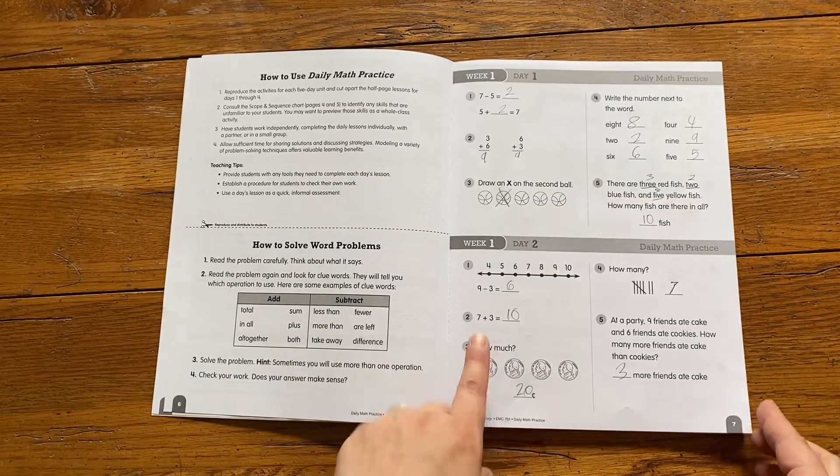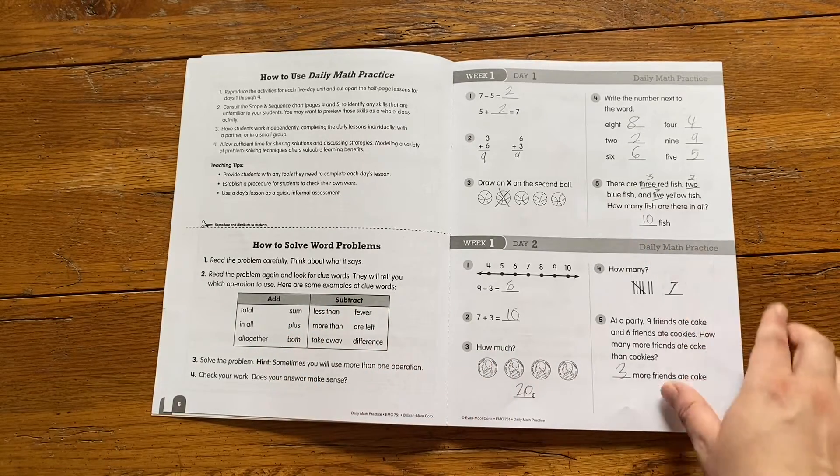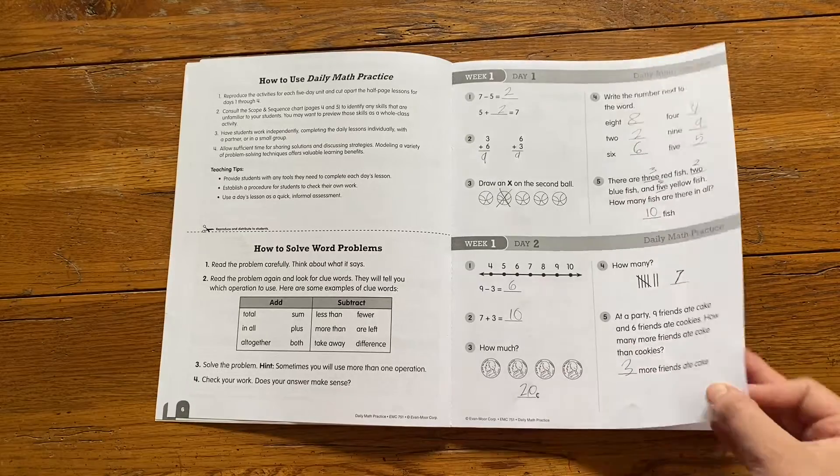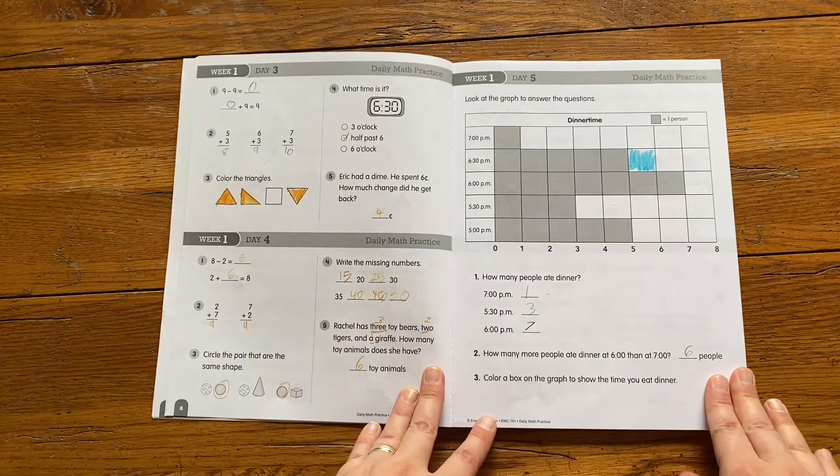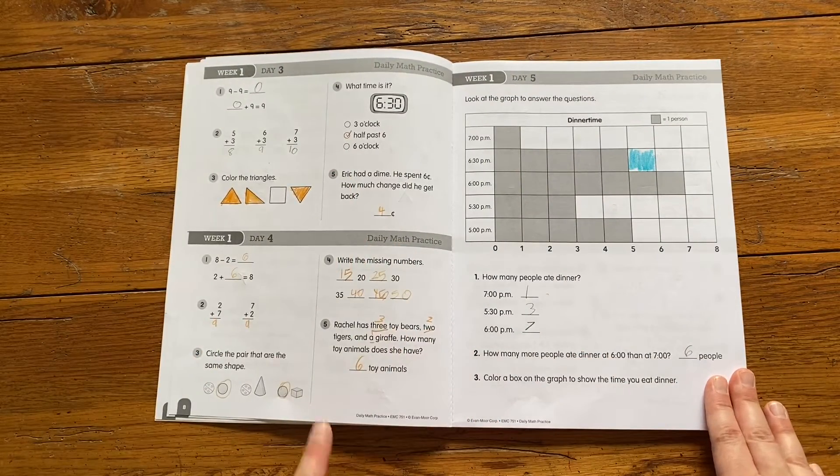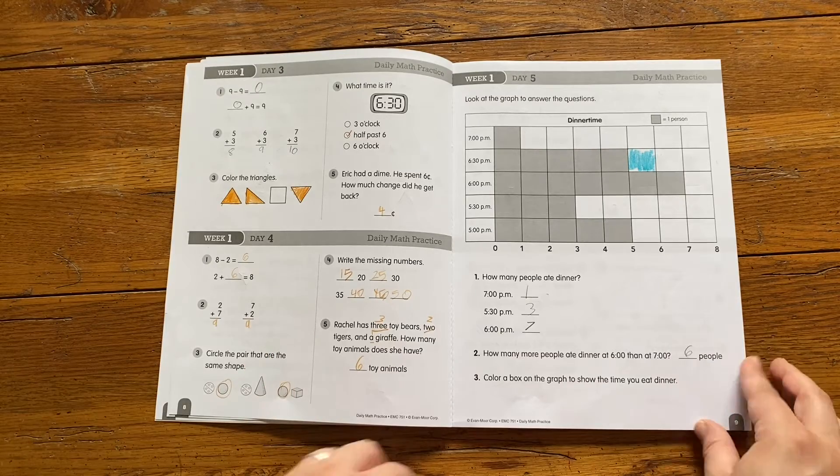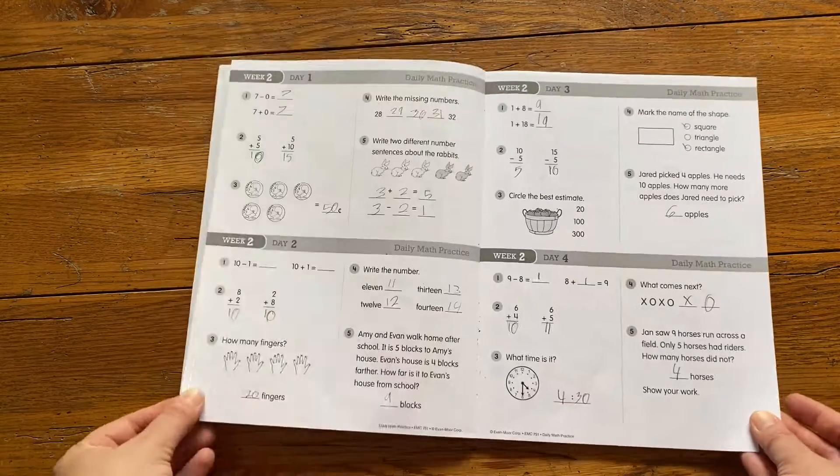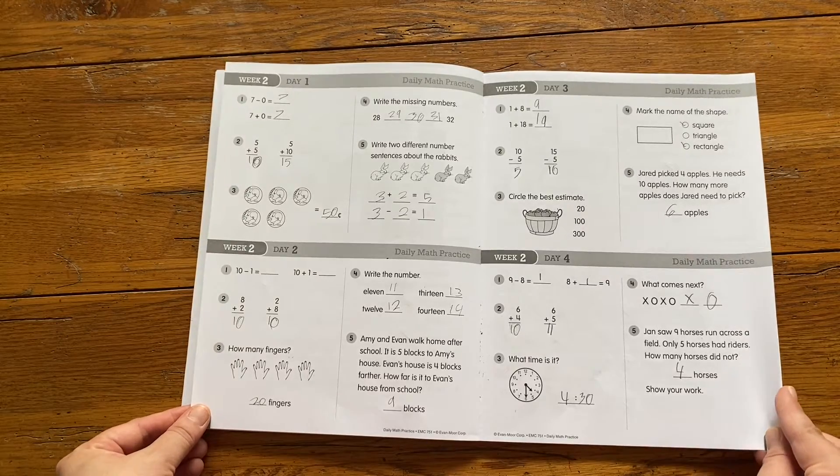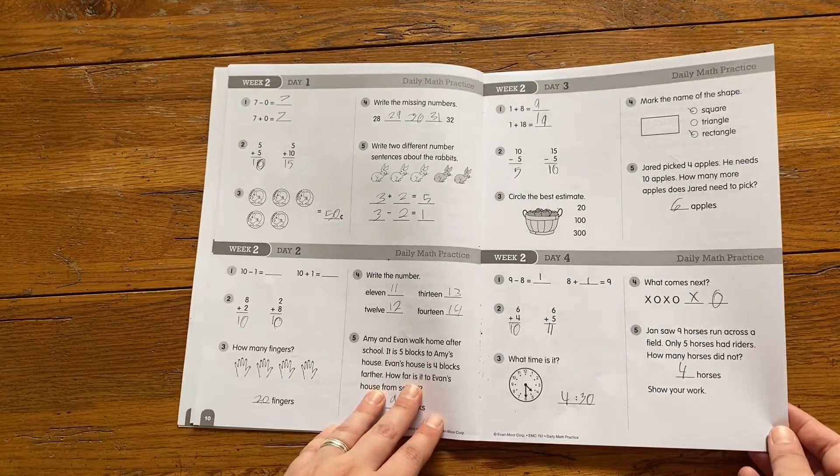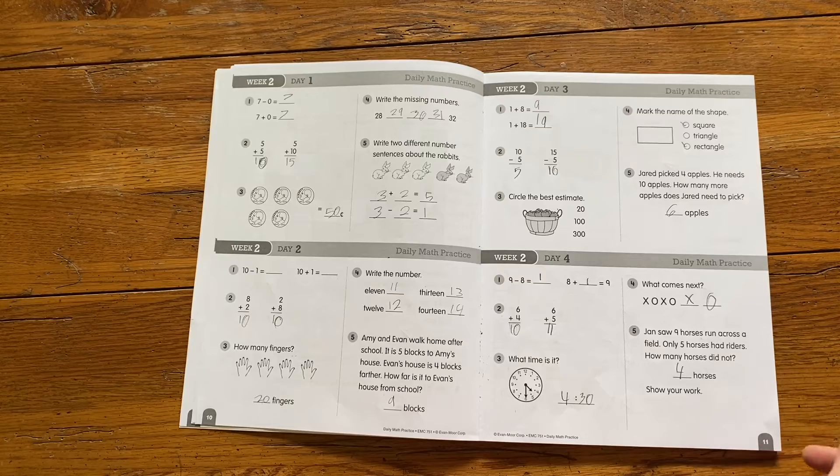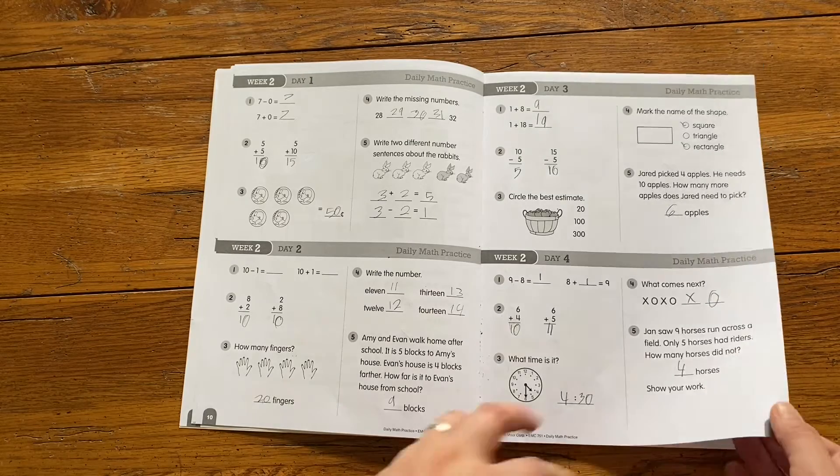So you can see we've got money, tally marks, just some simple addition and subtraction, some time, missing numbers, graphing, and it just kind of continues like that. Week 2, estimating, patterns.